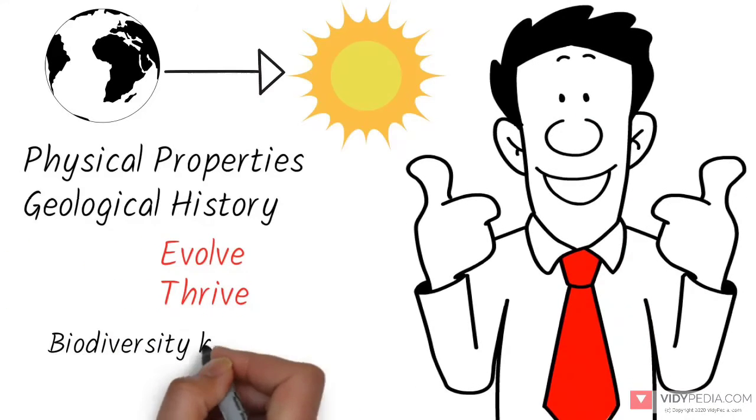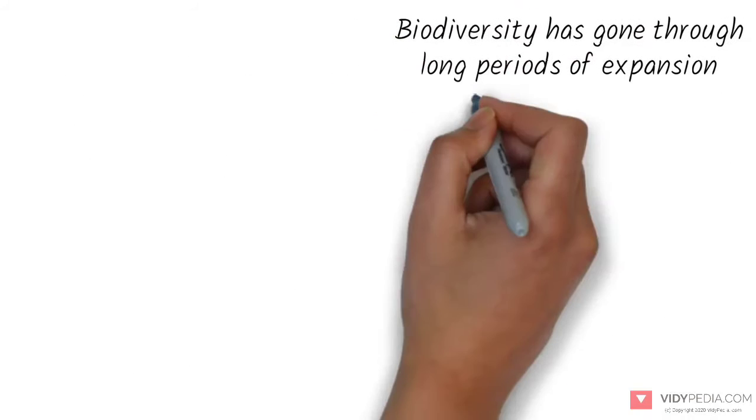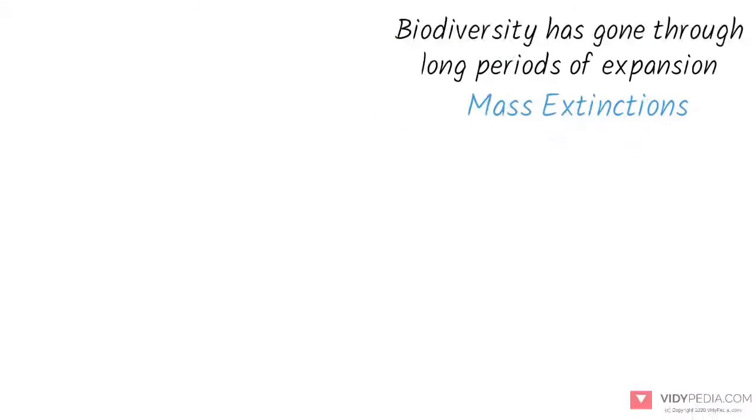Biodiversity has gone through long periods of expansion, occasionally punctuated by mass extinctions. Over 99% of all species that ever lived on Earth are extinct.